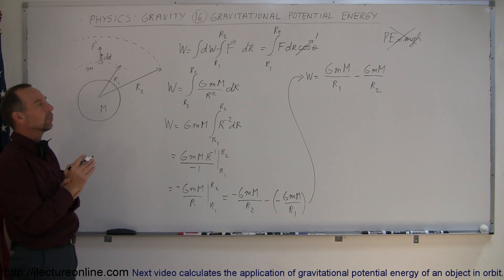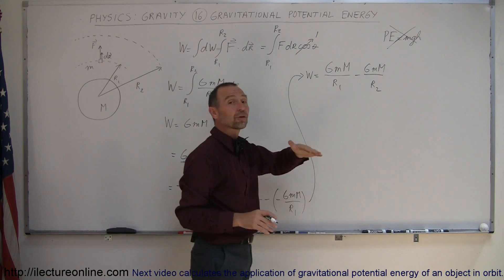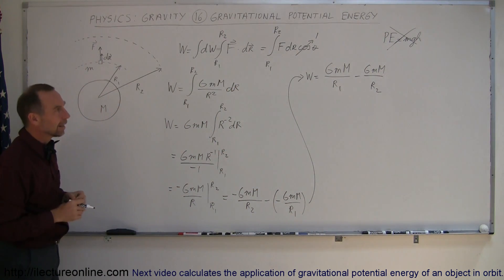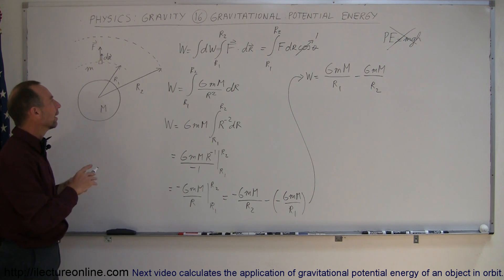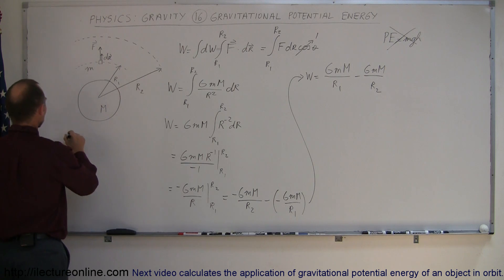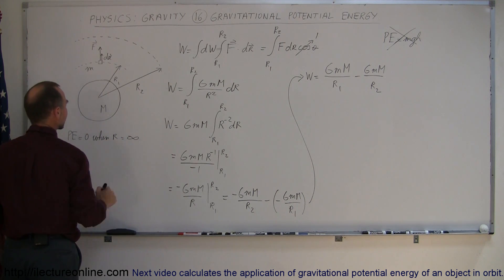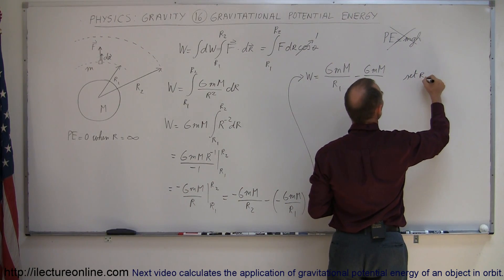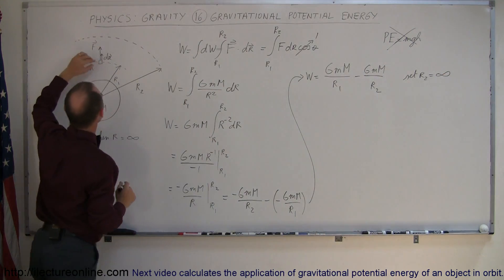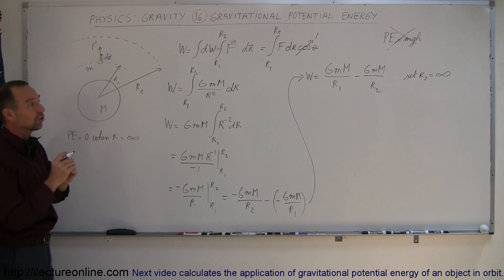In physics, to make things easy, we need a reference point. When we used the old mgh equation, the reference height was the surface of the earth or a table. For orbits, the standard convention is that the potential energy equals zero when the distance r is at infinity. So we set r2 equal to infinity, meaning we lift the object from r1 out to infinity, at which point the potential energy is zero.